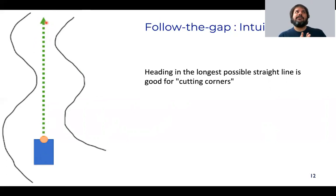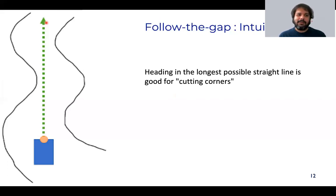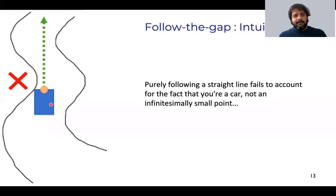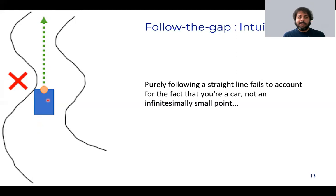A problem with the naive approach: heading toward the widest or deepest gap doesn't guarantee you'll clear all obstacles between you and that direction. The car is not a point object — it has physical width and dimensions. Even if the LiDAR ray itself is aligned with the intended heading (the deepest reading), the left or right edge of the vehicle may still clip an adjacent boundary or obstacle. The robot cannot be treated as an infinitesimally small point mass.